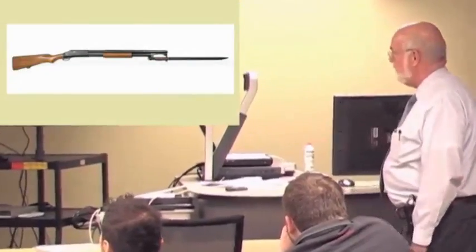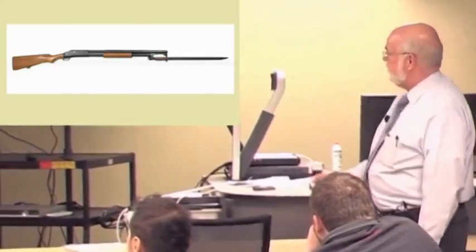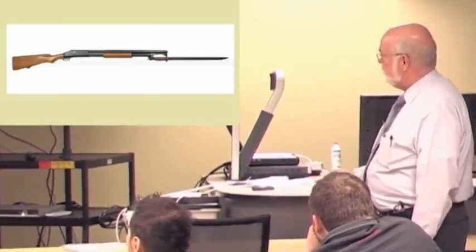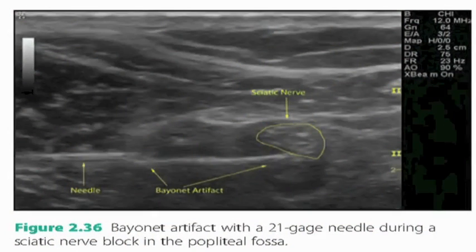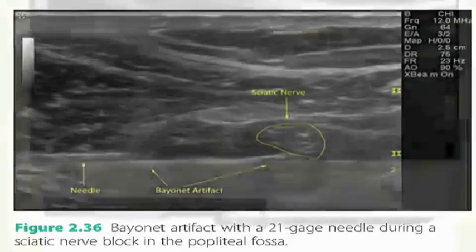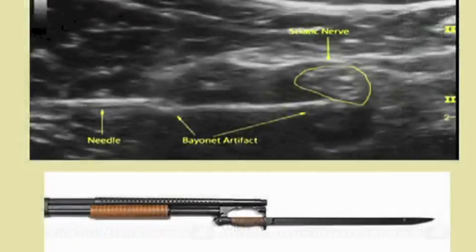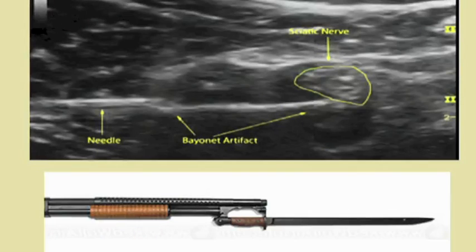There's an artifact called the bayonet artifact where, let's say, you're trying to do a regional nerve block, and here's your needle coming in. Well, why is the needle bayonet shaped here? Well, this is an example of that fact that we have, say, fatty tissue here and muscle tissue here, and the machine has to assume that everything is coming back at 1,540 meters per second, but it's not. So it simply cheerfully displays things assuming 1,540 where it's not the accurate number to use.